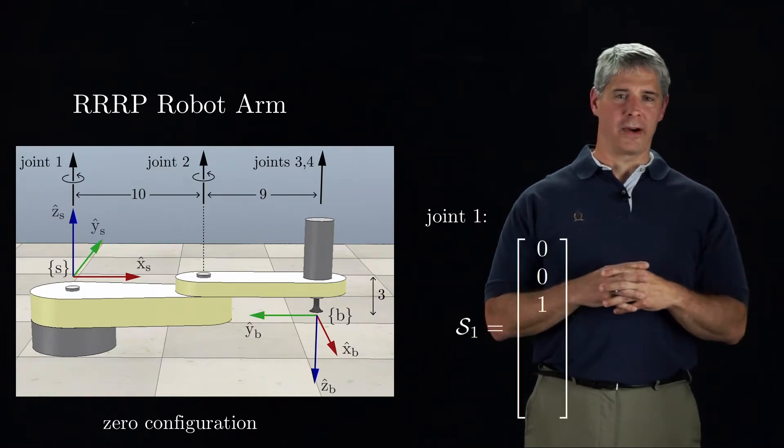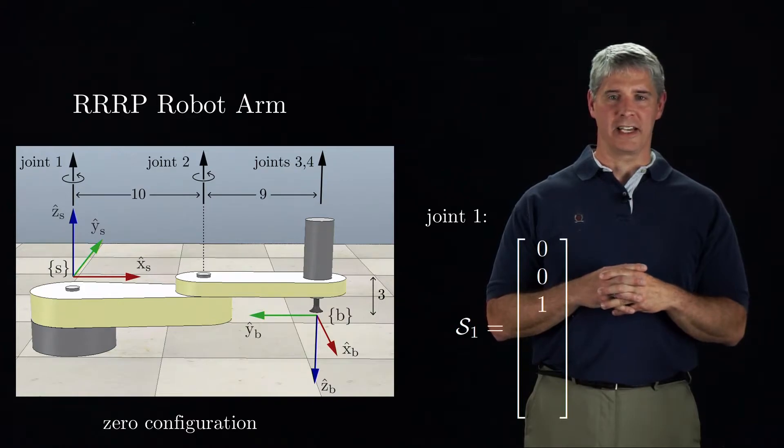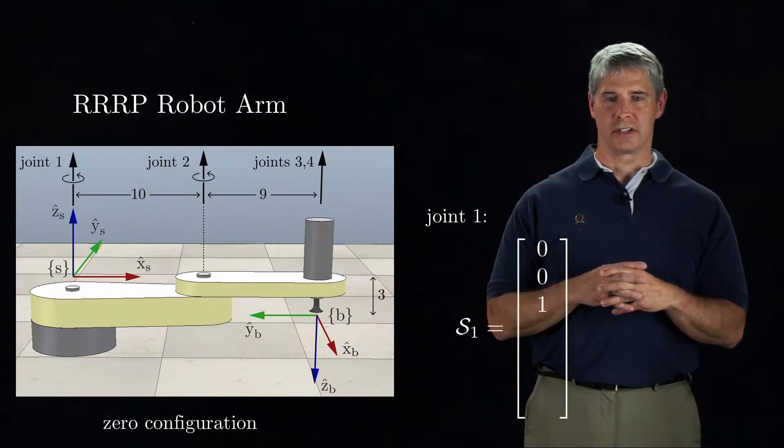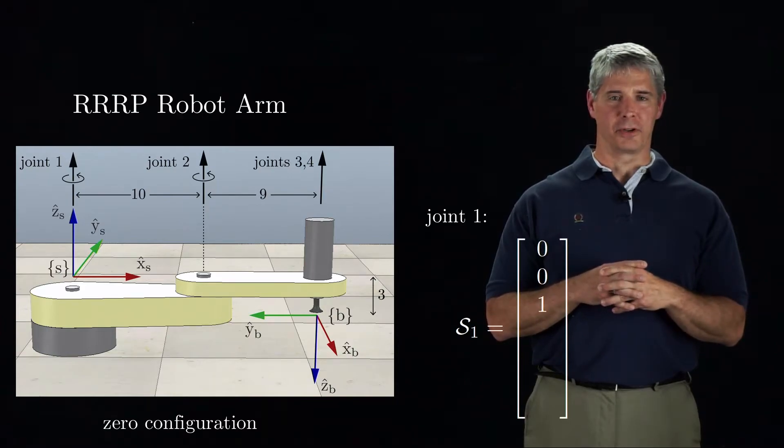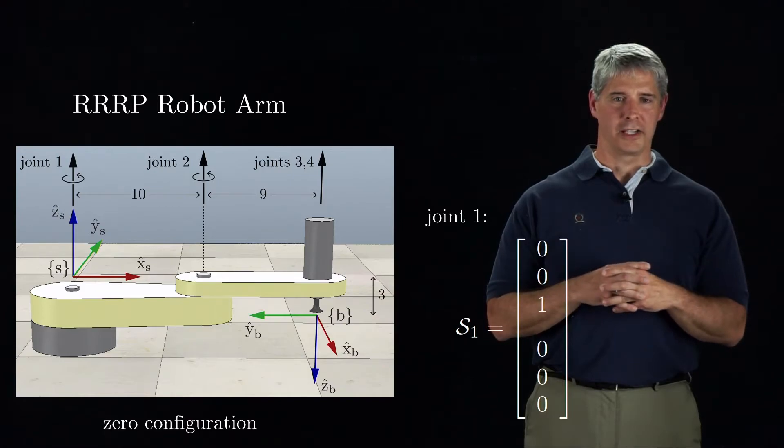Next let's find the screw axis of joint one, expressed in the S-frame. The axis of rotation is aligned with the S-frame z-axis, so the angular component of S-1 is [0,0,1]. A rotation about this axis causes no linear motion of a point at the origin of the S-frame, so the linear component of the screw S-1 is 0.